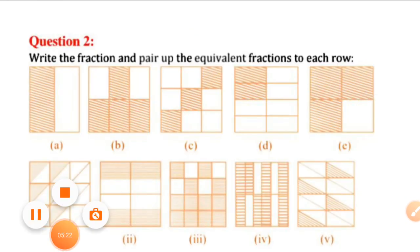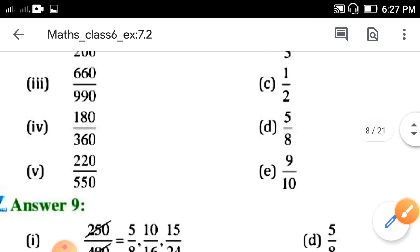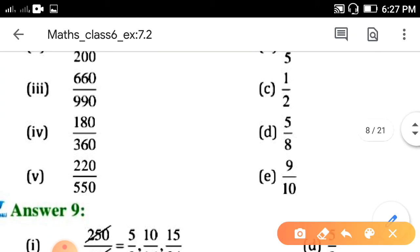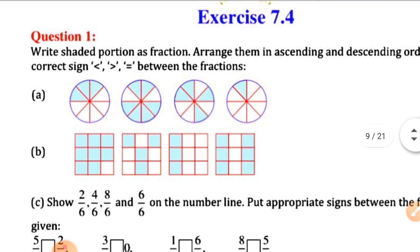Again, option A and 2 extra equivalent fractions you have to write. So, this way you have to complete all the examples. Remaining 2 is homework. Answers are already given. So, up to here only, in the next video, we will start 7.4. Thank you.